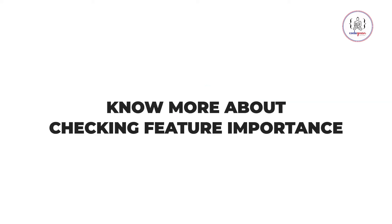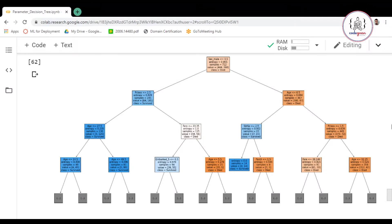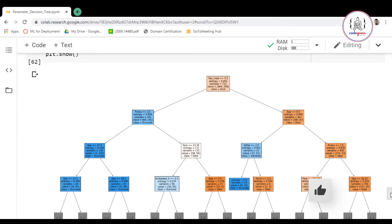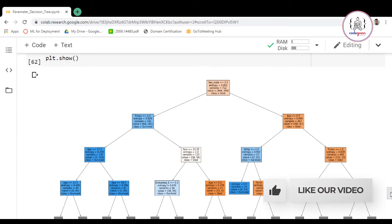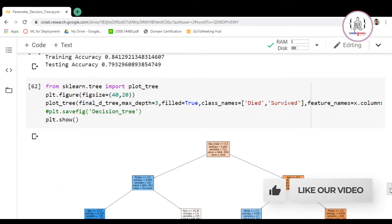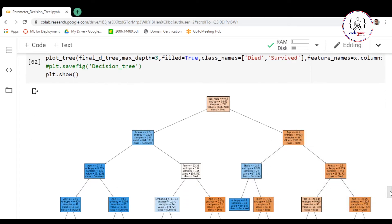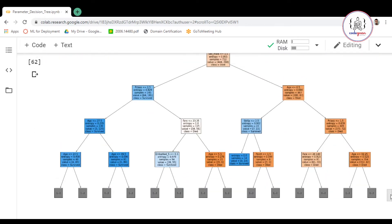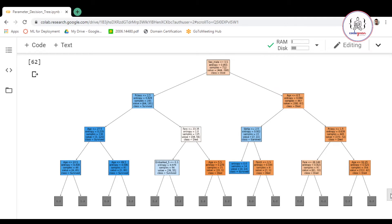Hello everyone and welcome. In this video we are going to see how we can plot or get to know the feature importance in a decision tree. In our previous video we saw how to plot the decision tree. Now let's see how we can determine the feature importances in this decision tree.